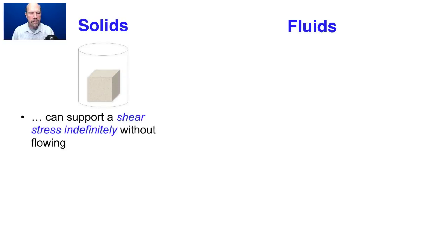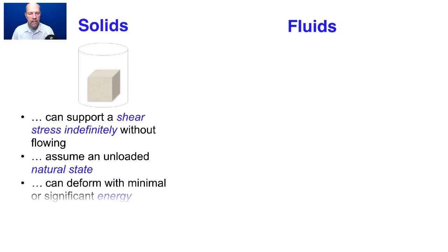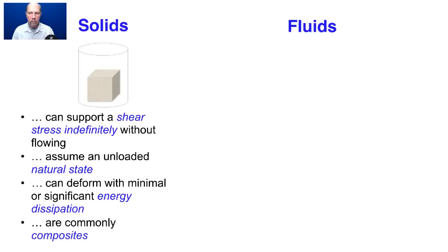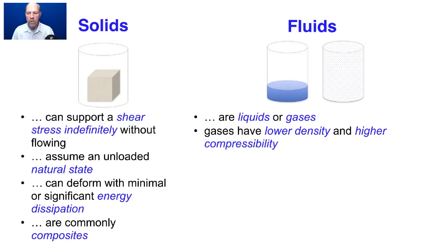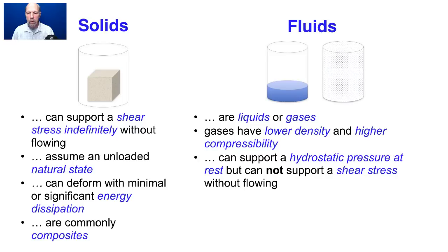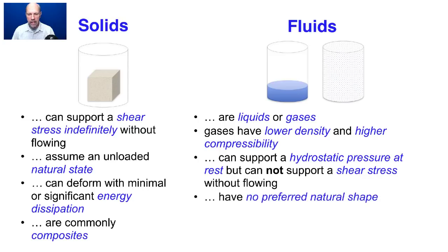We classify continua as solids and fluids. Solids can support a shear stress indefinitely without flowing and assume an unloaded natural state. They can deform with minimal or significant energy dissipation, and they are commonly composites. Fluids are liquids or gases, where gases have lower density and higher compressibility than liquids. Fluids can support hydrostatic pressure at rest but cannot support a shear stress without flowing. They have no preferred natural shape, dissipate energy as heat when they flow, and are commonly mixtures.